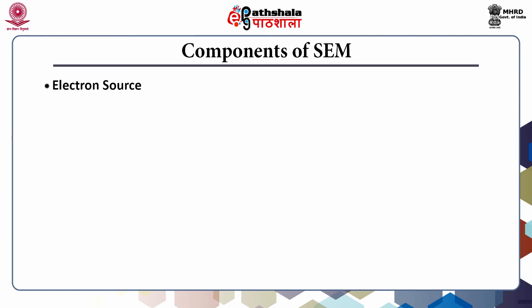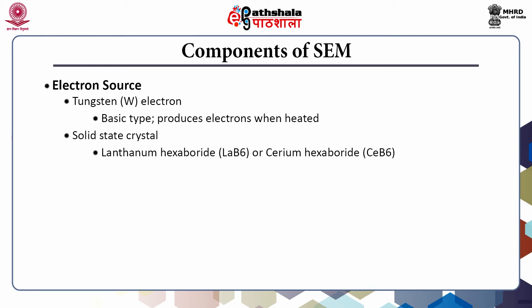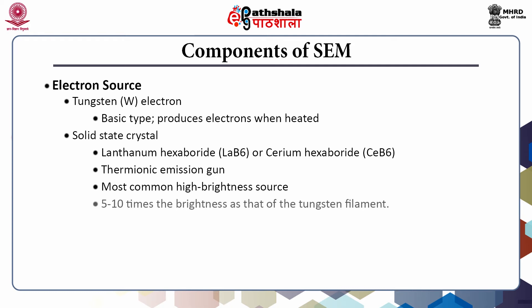The electron source is one of the important components of scanning electron microscope. There are three common types of electron sources. The first is the tungsten electron filament, which is the basic type of electron source. It produces electrons when the filament is heated resistively. The second is a solid-state crystal, lanthanum hexaboride or barium hexaboride. This source is a thermionic emission gun and is the most common high-brightness source, offering about 5 to 10 times the brightness of a tungsten filament.